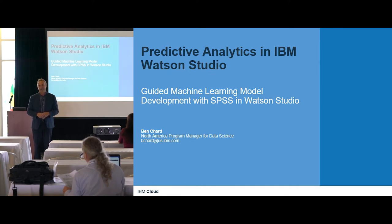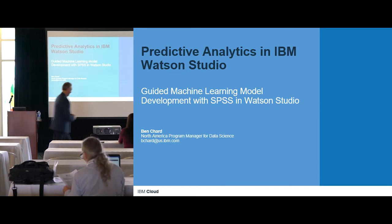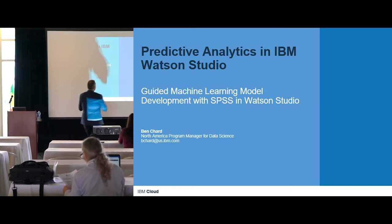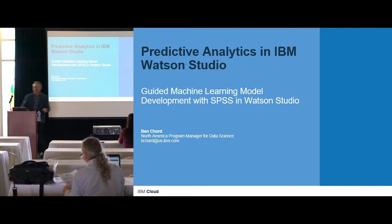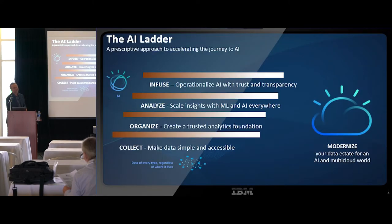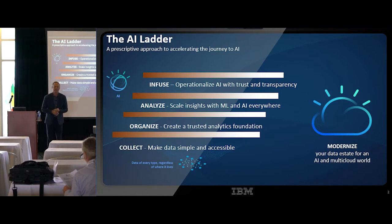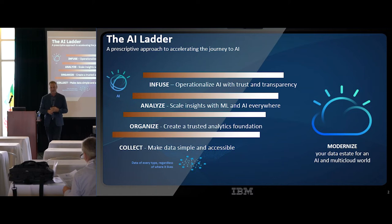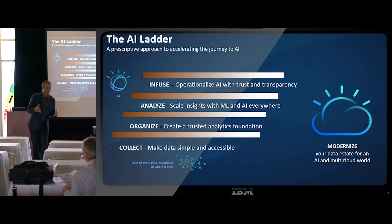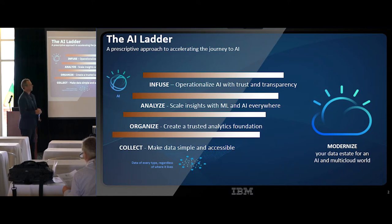I see no one laughed at my stats joke — Y equals A plus BX. Never mind, we'll jump straight into this. So let's put this into context. I've mentioned machine learning and artificial intelligence, and if you ask 10 people about the definition of these two things, you'll get 10 different answers. So let me try and put it in some context for what we're going to be talking about today.